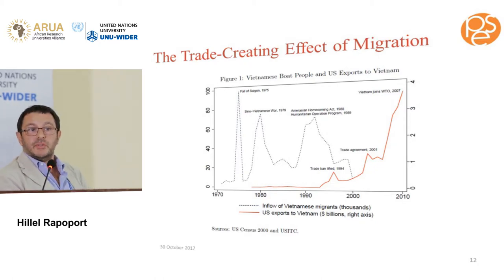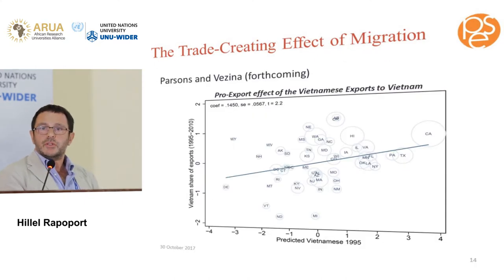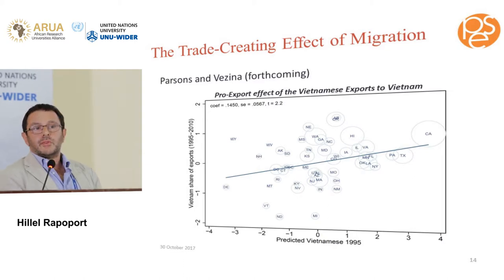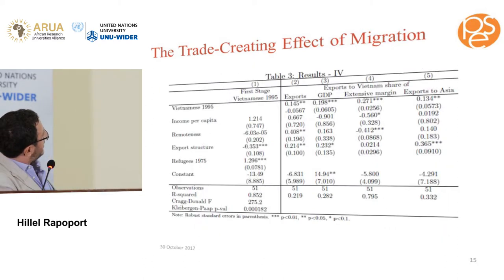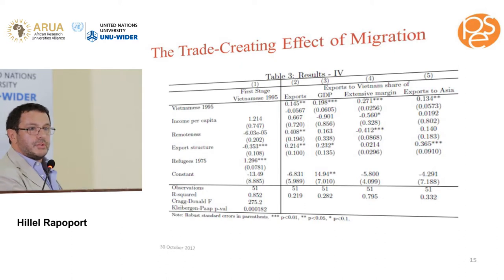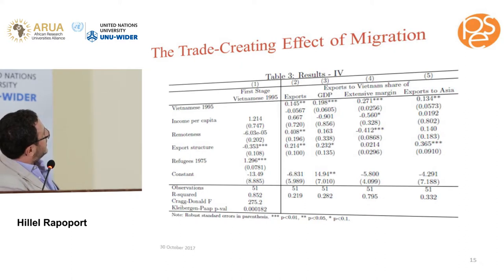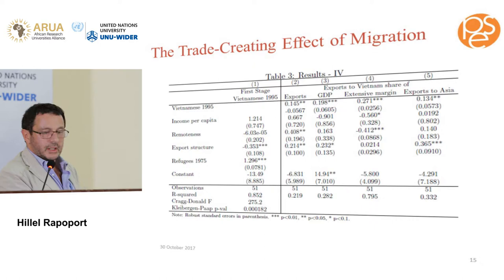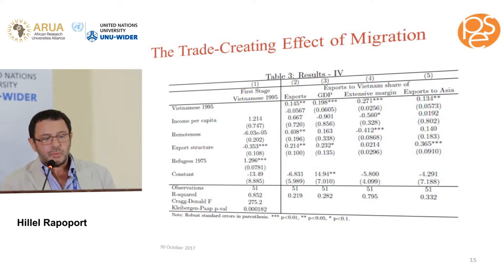They ask whether US states that received more Vietnamese refugees in the late 1970s traded more with Vietnam 20 years later — and indeed they did. The elasticity of trade to migration is about 15%, slightly higher than non-experimental studies which got around 10% — meaning 10% more immigrants yields 1% more exports. They also find significant effects at both the extensive and intensive margin, with placebo tests supporting the identification. I see this as the best paper on this topic.